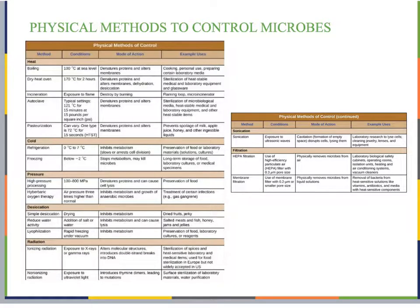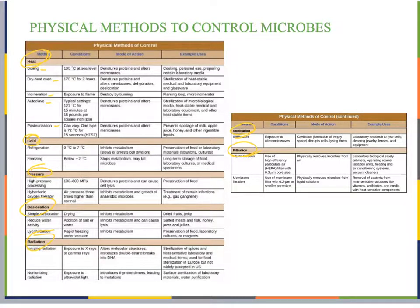The text includes tables summarizing all the different physical methods of control. These are organized by heat (boiling, dry heat, incineration, autoclave, pasteurization), cold, pressure, desiccation, radiation, sonication, and filtration. You should be familiar with all these different types and their applications.